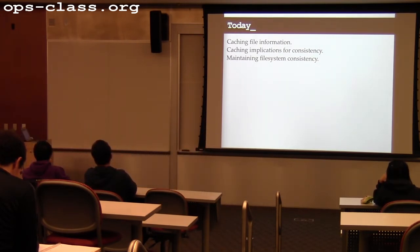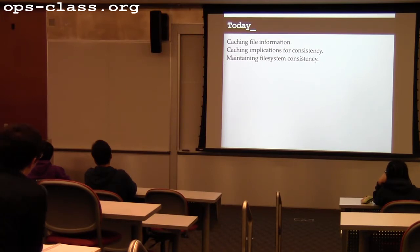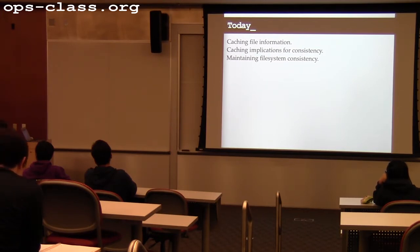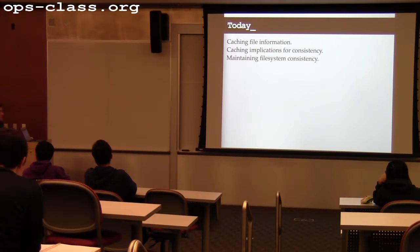Once we start talking about caching, we have to talk about consistency. For now, what we've been talking about is file system operations that go to disk immediately. But if they're going to stop in memory, then it's possible that the disk is going to be in some sort of interesting state if and when the system crashes or the power goes out.